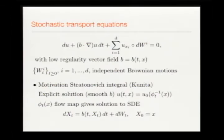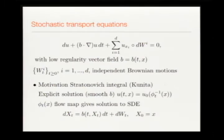Typically you have a stochastic basis being fixed: a probability space, a sigma-algebra of events, and a filtration. The Brownian motions are adapted to this filtration. You can solve this equation assuming b is smooth by setting up the stochastic characteristics, inverting the flow, and putting it into the initial data.